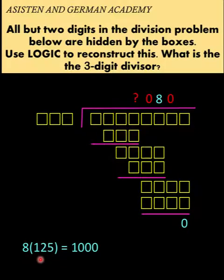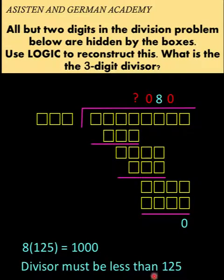So if eight times 125 is a four-digit number, and in here we only have three digits, then this divisor must be less than 125. And so we now have our first conclusion here: this three-digit divisor must be less than 125. It could be 124 or less.